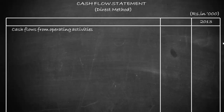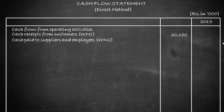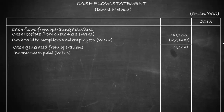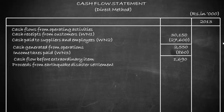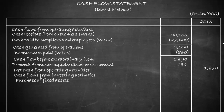Now preparing the cash flow statement under the direct method. Cash flows from operating activities: cash receipts from customers (Working Note 1) are 30,150. Cash paid to suppliers and employees (Working Note 2) is 27,600. The difference gives cash generated from operations. Deducting income tax paid (Working Note 3) of 860 gives cash flow before extraordinary item of 1,690. Adding proceeds from earthquake disaster settlement of 180 gives net cash from operating activities of 1,870.